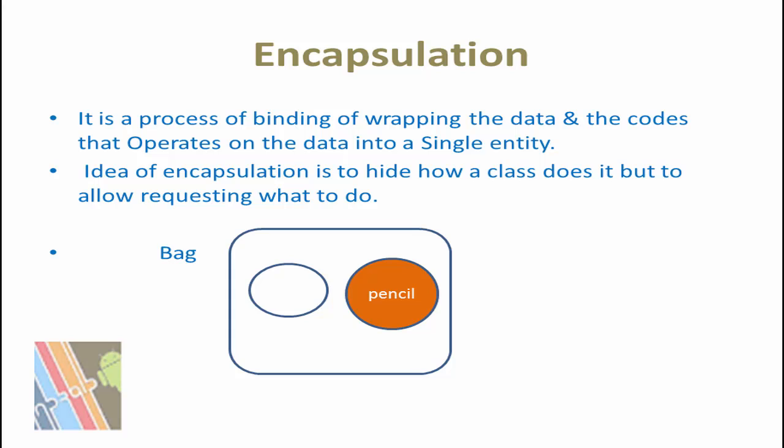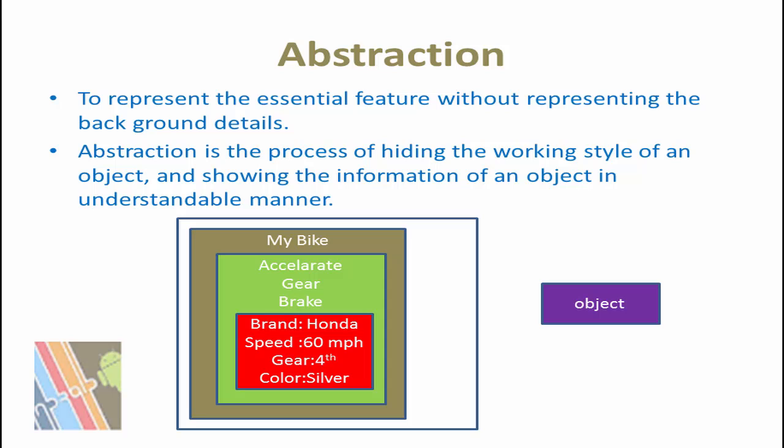Now let's look at encapsulation. What is encapsulation? It is the process of binding or wrapping the data and the code that operates on that data into a single entity. In a real-life example, suppose you have a pencil and a book and you put them in a bag — that is an example of encapsulation. Or, an easier example: when you are using a mobile app, you get the features and the GUI of the application, but you don't know how the application is made — that is encapsulated from you.